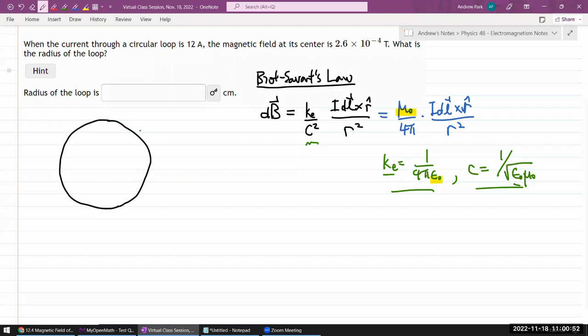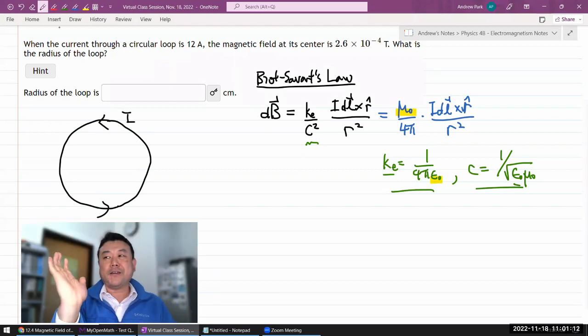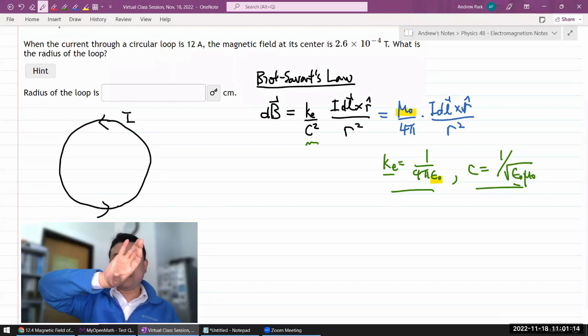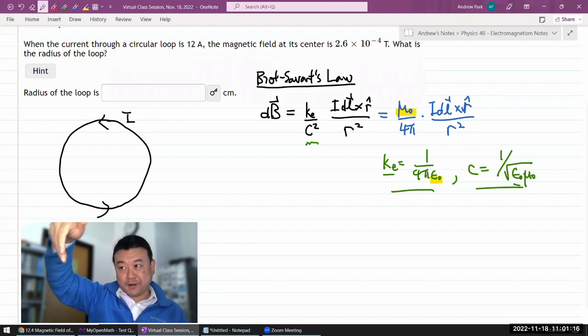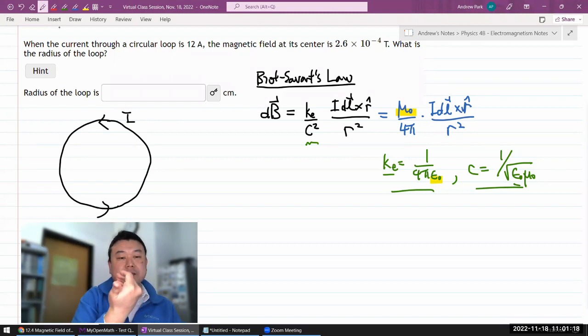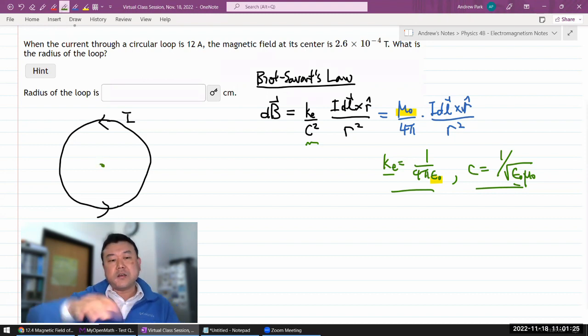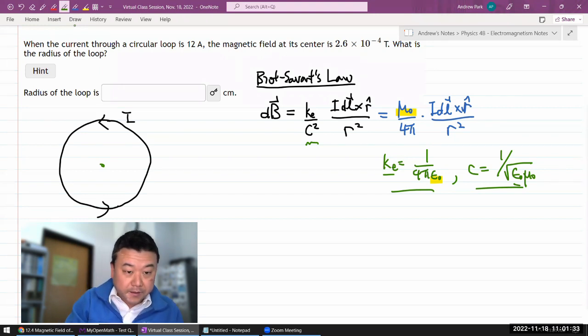Let's say if you have current flowing counterclockwise, then the amount of magnetic field. Since they're only asking you for the center, we'll just focus on the center. The direction of the current in the center should be out of the screen or out of the page that you're looking at. So that's the direction of magnetic field.